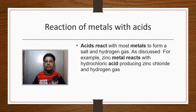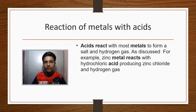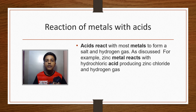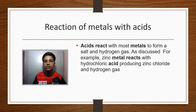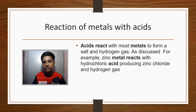For example, zinc metal reacts with hydrochloric acid to produce zinc chloride and hydrogen gas. So if you choose a metal sample, you would choose zinc. Non-metals do not react with acids, so let's move on to the reaction of metals with bases.